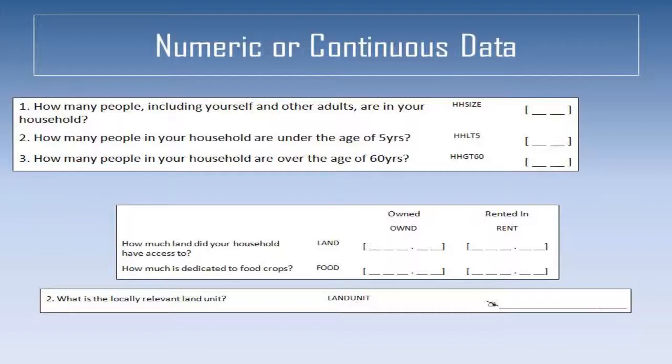Numeric or continuous data is the result of questions or measurements that naturally give a number response, such as number of household members, yield measurement, plot size, age, amount of fertilizer applied, etc.